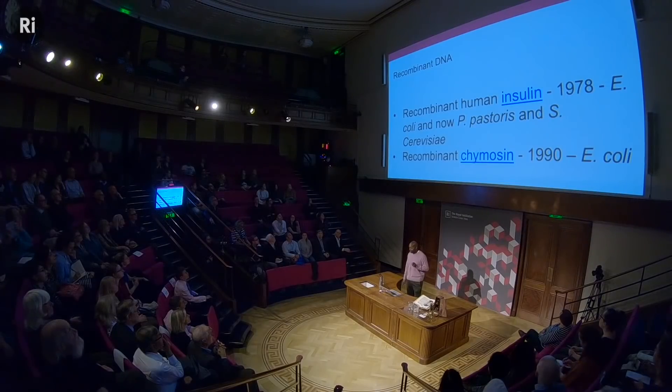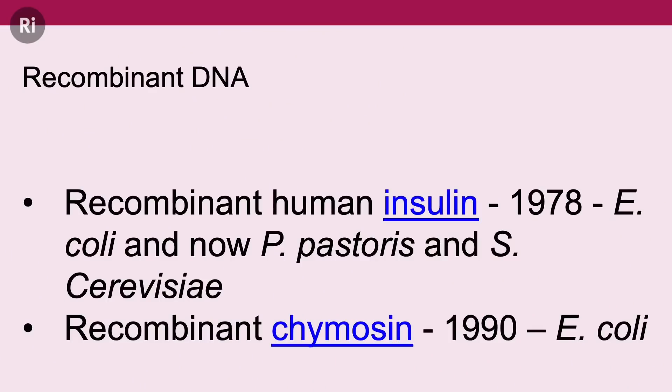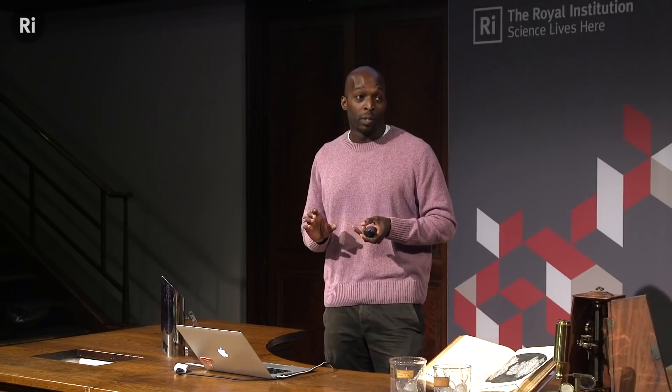The first major milestone was in 1978 — a great year, the year of my birth — when they discovered how to make recombinant human insulin. It was a massive step forward because before that, all diabetics relied on insulin harvested from animals: cattle, pigs, and cows. Animal insulin is effective, but not as effective as human insulin. So the ability to create human insulin within a bacteria was the first step.